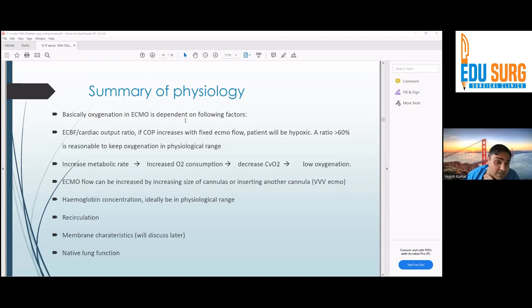Oxygenation in ECMO is dependent on the following factors: the extracorporeal blood flow and cardiac output ratio. How much blood is going through the membrane? How much part of cardiac output is going through the membrane? If cardiac output increases and your ECMO flow is the same, the patient will be hypoxic. A ratio of more than 60% - ideally 60% of cardiac output should pass through the membrane to keep a patient properly oxygenated in physiological range.